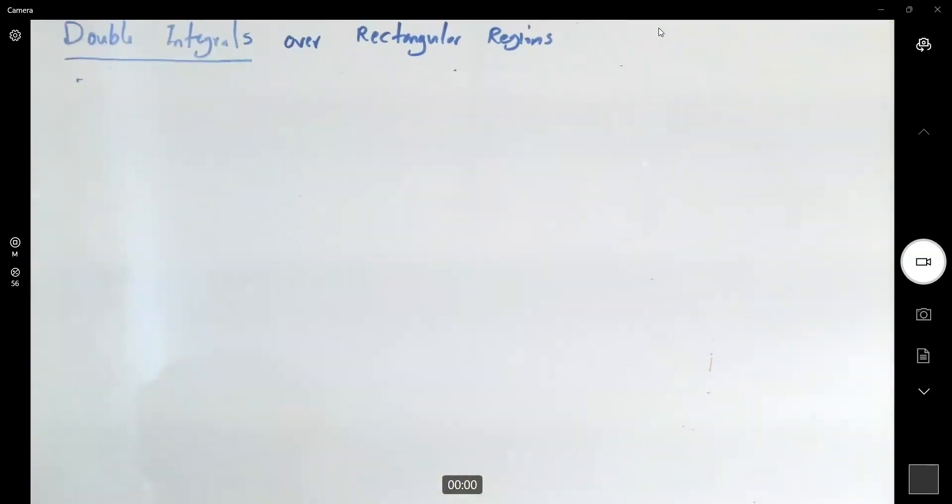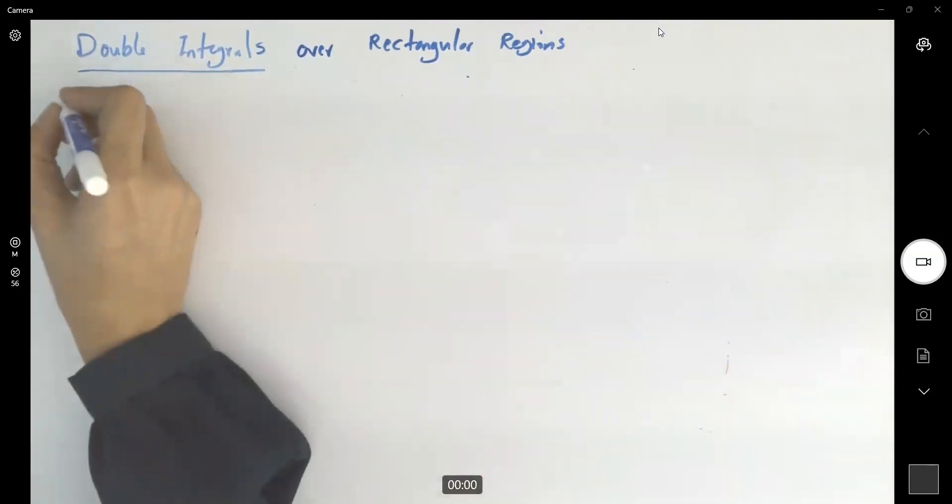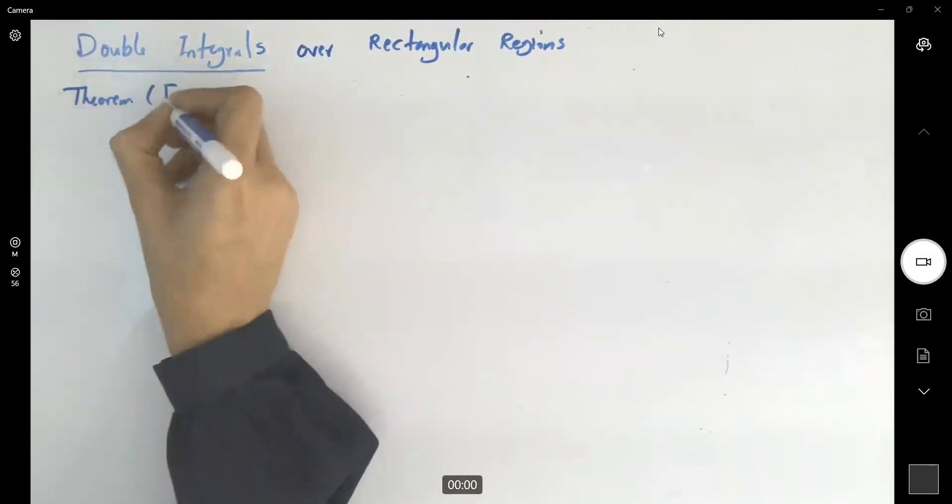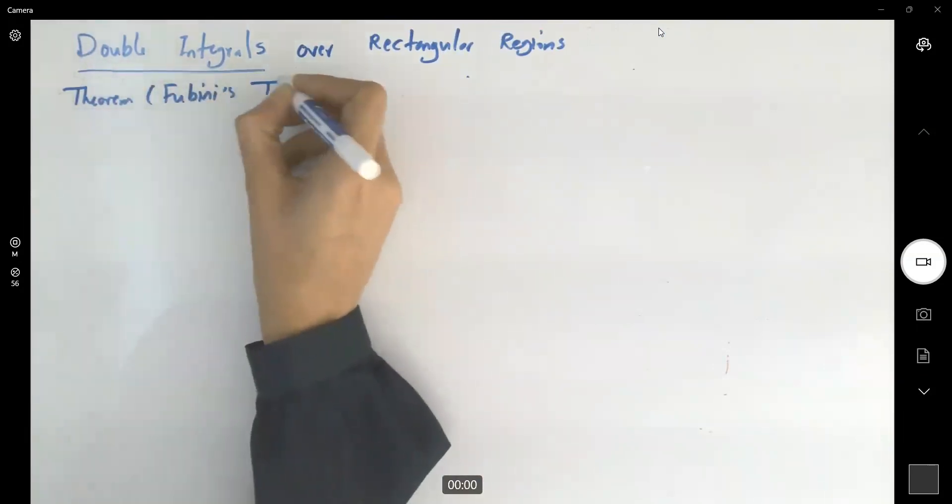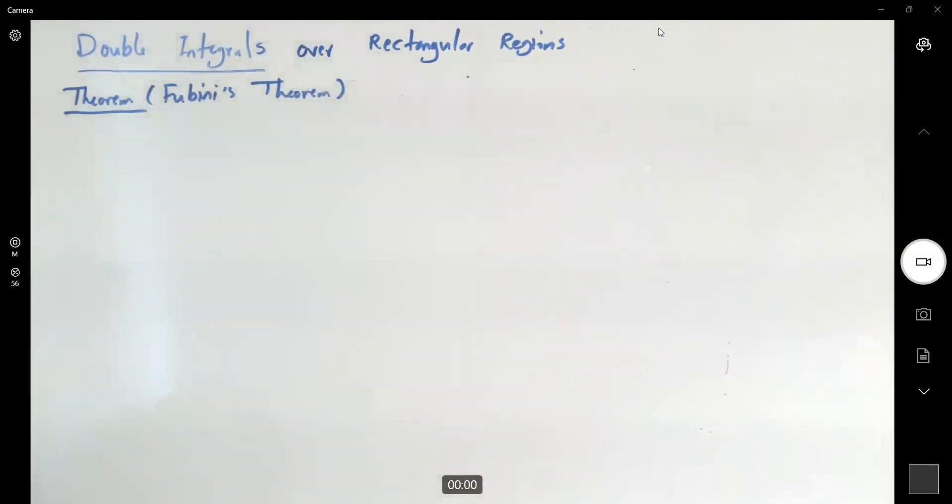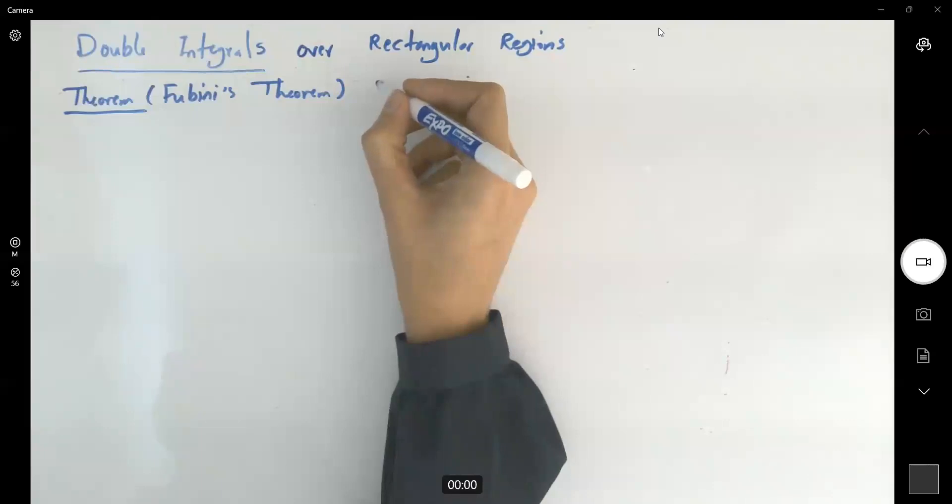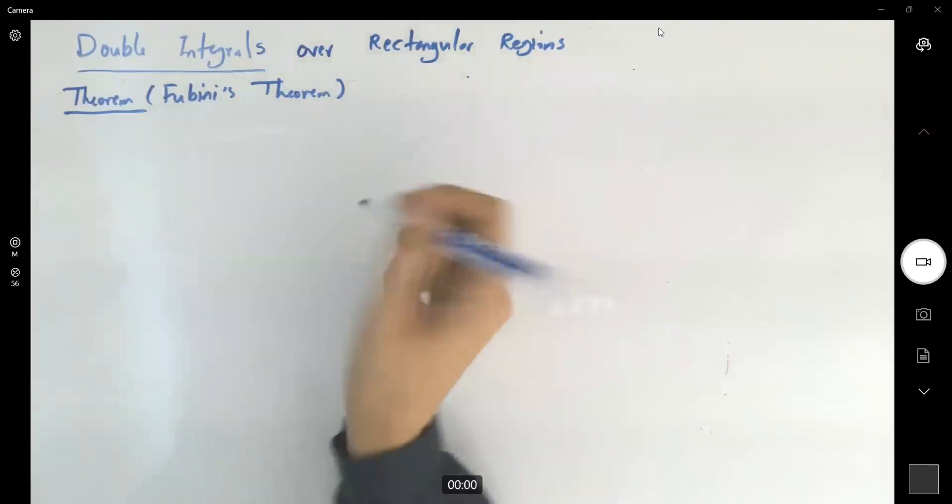In general, Fubini's theorem says we have the following case for double integrals. The theorem, Fubini's theorem, says if f is continuous on a rectangular region as follows: